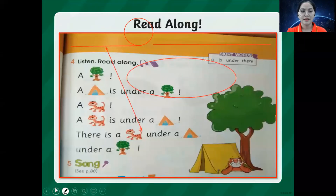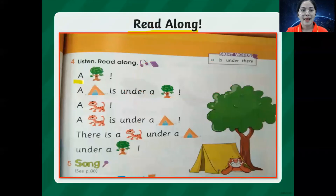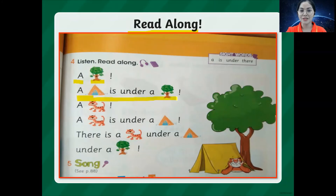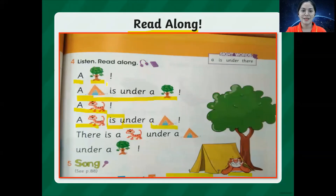Now let's move on. So this would be your story for today. It says here — read along. A tree. A tent is under a tree. So there is a tent there and this is the tiger, so it's under a tree. A tiger is under a tent. This is the sight word is. There is a tiger under a tent. Very good.